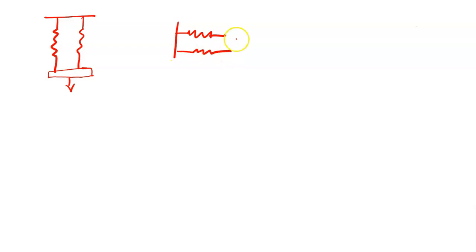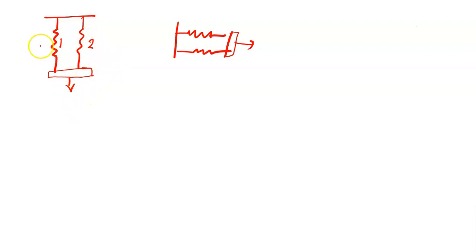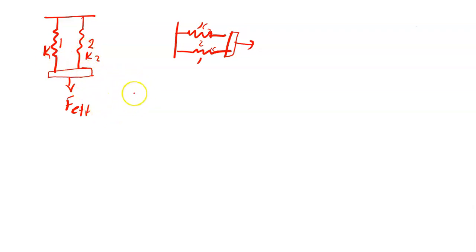So this is the vertical and that is going to be the horizontal arrangement. This is the force. The first spring, spring 1, is this one, and spring 2 has spring constant k1 and k2 respectively. The same applies to the horizontal arrangement. For the effective force in the parallel arrangement, we cannot assume these will have the same effective force.